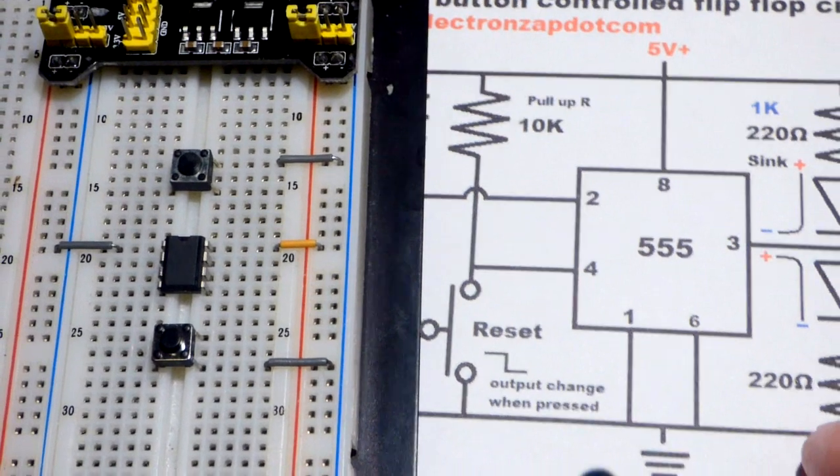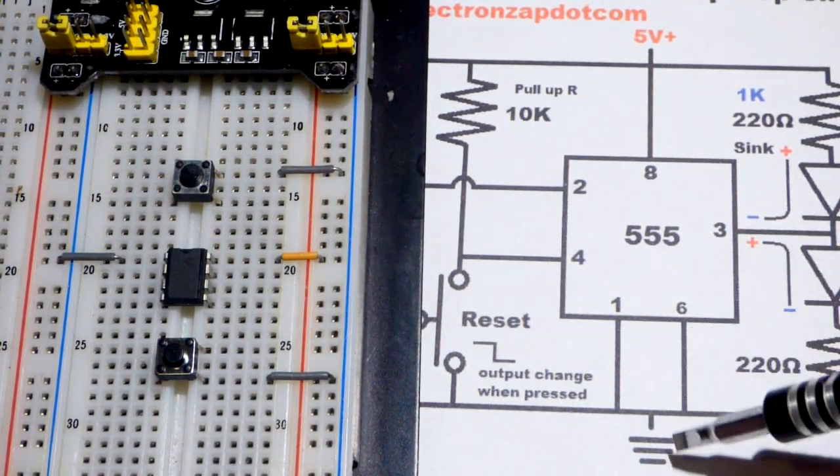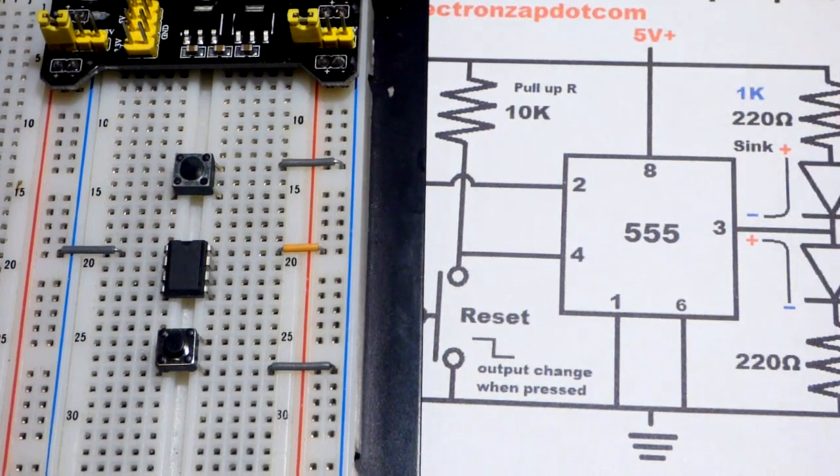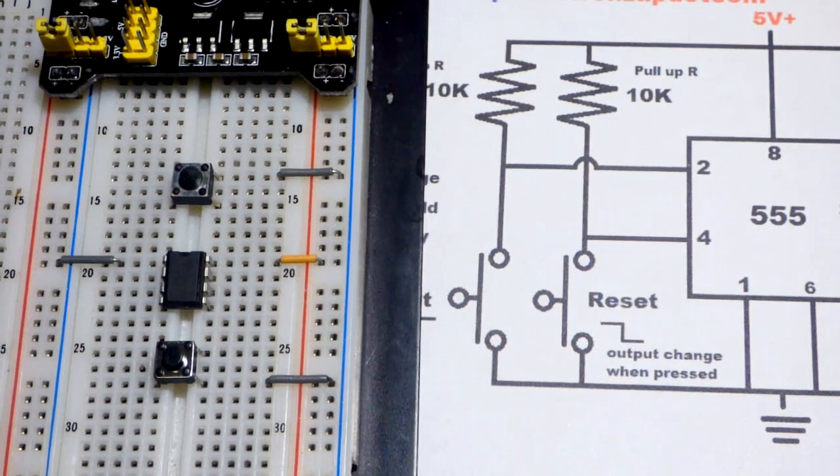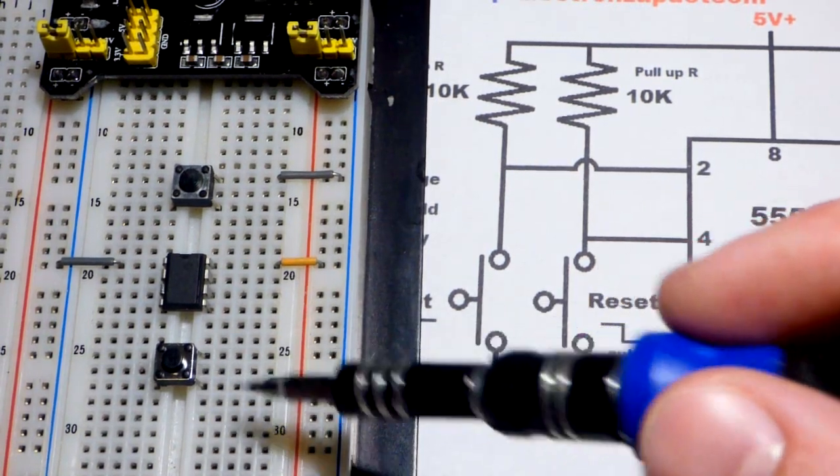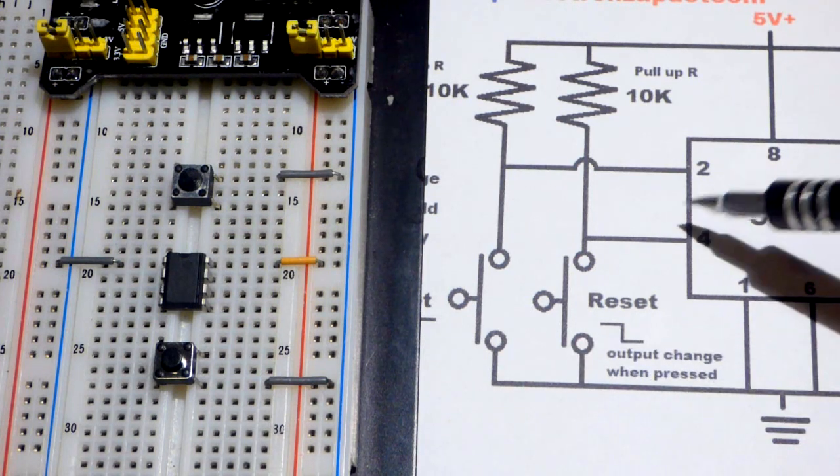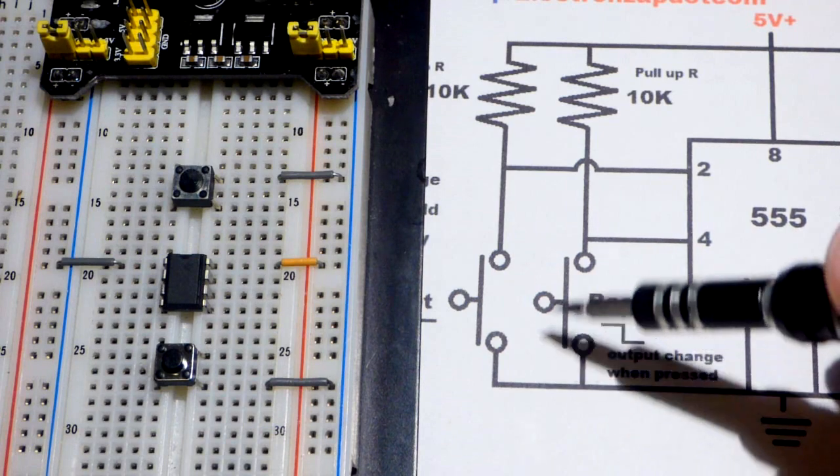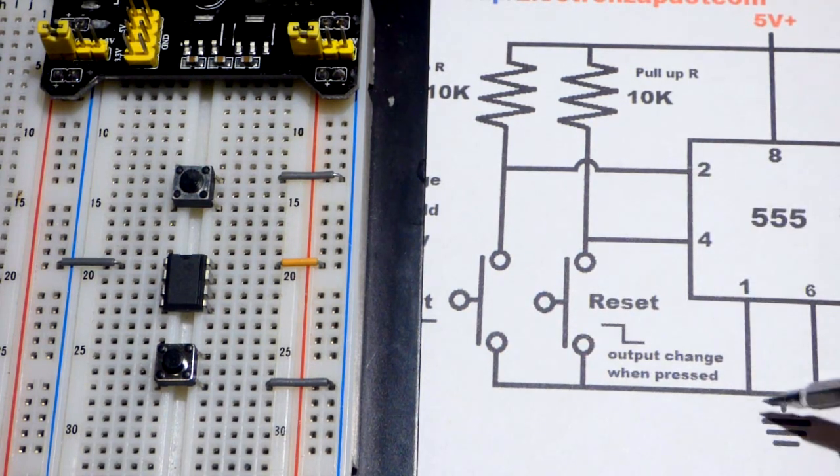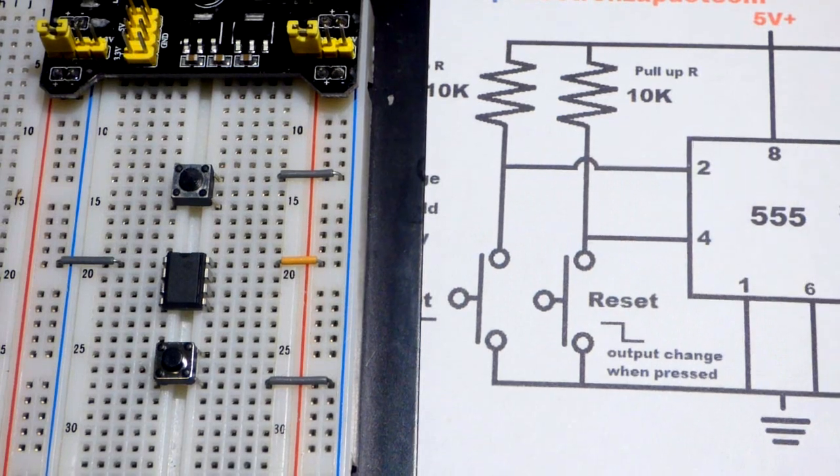And you can see those right here in the schematic. So pin number one to the negative rail to ground, pin number eight to the positive side of the power supply. So now we already have switches here. As you can see, one end of them goes to the negative rail. That's because pin four and pin two respond to zero volts.